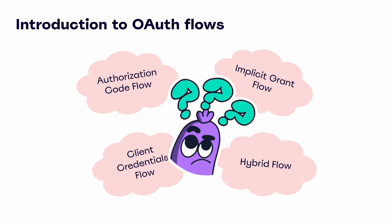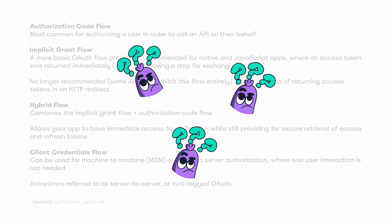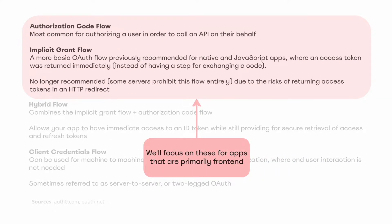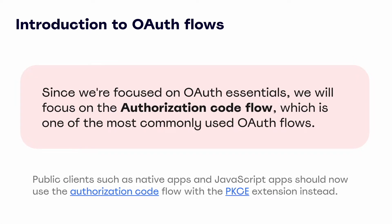We've covered the main components of OAuth and mentioned that there are various different flows, or grant types, that can be leveraged. Ultimately, the choice will depend on your exact use case and the needs of your application, end users, and the infrastructure available to you. For covering the essentials from a front-end perspective, we're focusing on the most common flows. You'll likely see these two referenced quite often: the authorization code flow and the implicit grant flow. Since the authorization code flow is one of the most commonly used and more secure flows, we'll consider it the recommended flow for today's purposes.